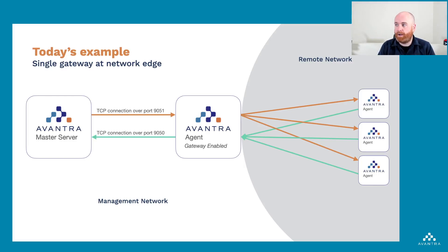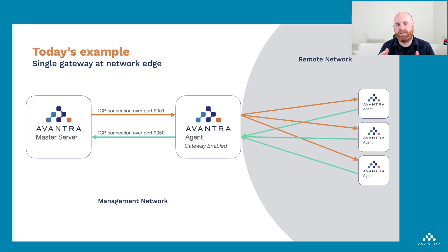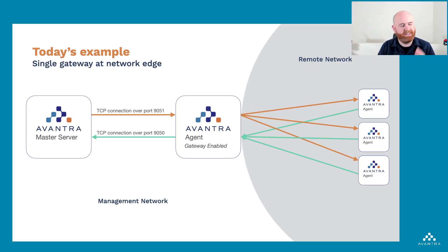The next thing I'm going to do is prepare for adding agents on the right-hand side — the remote agents which will not have a direct connection to this Avantra master server. I'm going to set up the remote network under a completely different customer within my Avantra master server. Once that's set up, I can configure the route through which all communication for that customer must follow. This is quite elegant because you don't want to configure a new route every time you add a system. We have the ability to say all agents within a specific customer must follow a specific route — that's a really powerful concept.